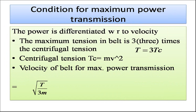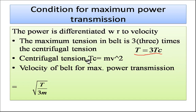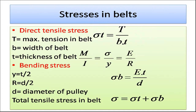Now we will determine the condition for maximum power transmission through a belt drive. The power must be differentiated with respect to velocity to obtain this condition. The result is that the maximum tension in the belt is three times the centrifugal tension: Tmax = 3 Tc. Since centrifugal tension Tc = MV squared, we can also find the belt velocity for maximum power transmission: V = square root of (T / 3M).